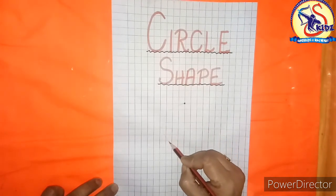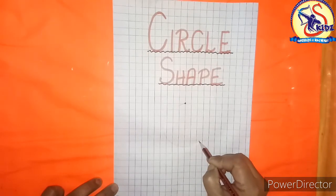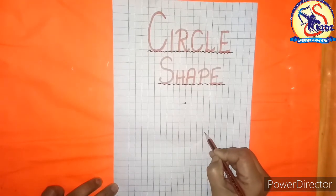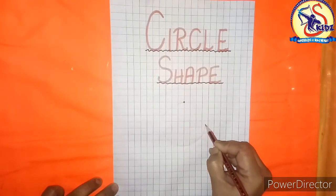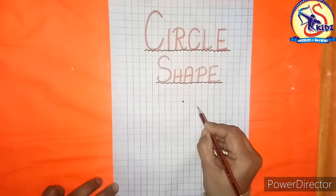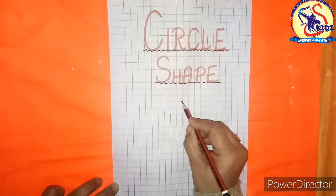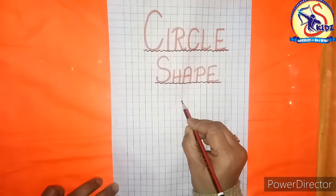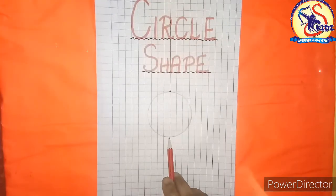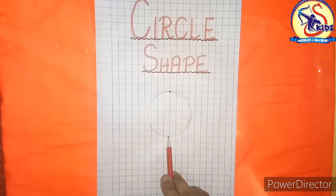Go down, then slowly come upwards, and join the dot. This is circle shape and it has no sides.